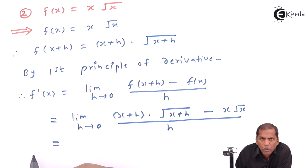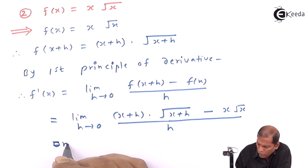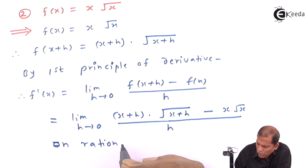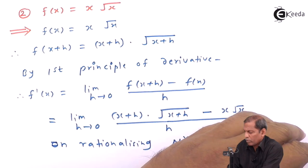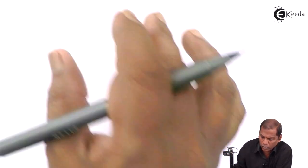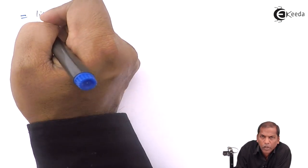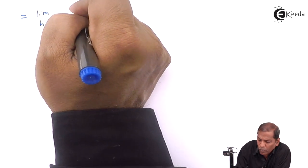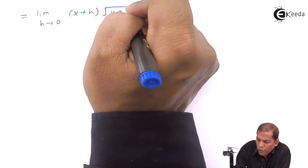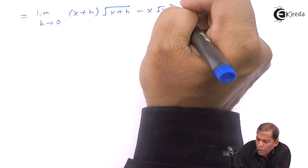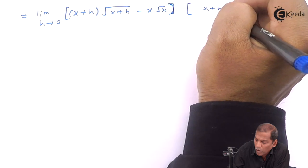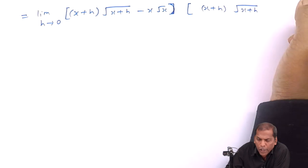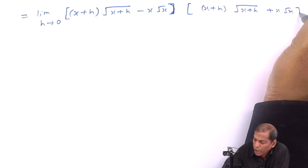Here we have a radical part in the numerator, so we have to rationalize the numerator. On rationalizing the numerator, the next step is limit h tends to 0 of (x+h) into square root of (x+h) minus x root x, multiplied by the bracket (x+h) into square root of (x+h) plus x root x, all divided by h.